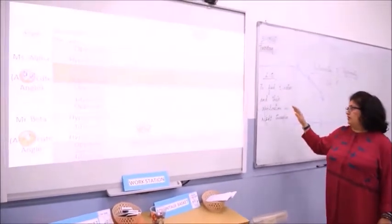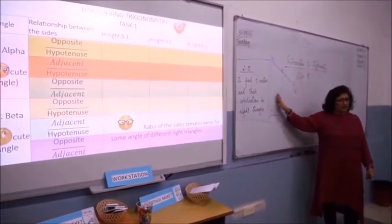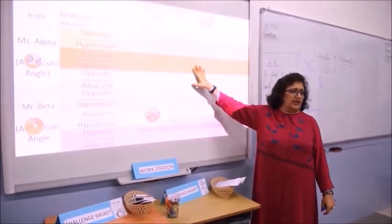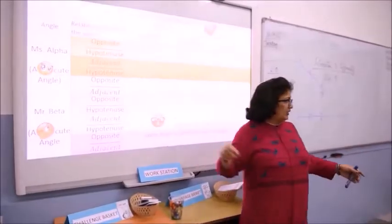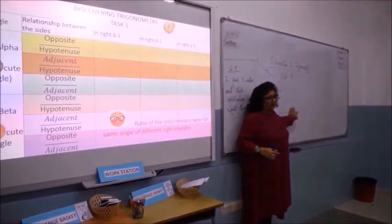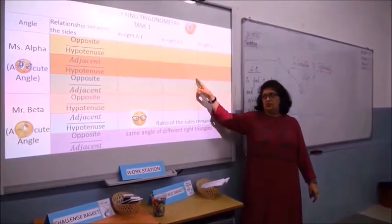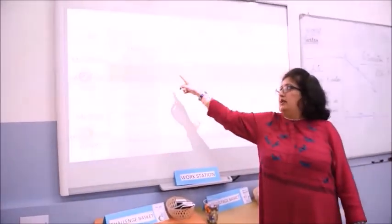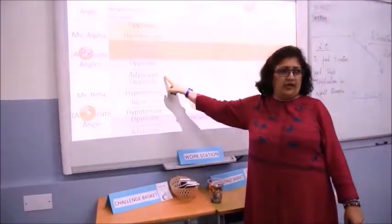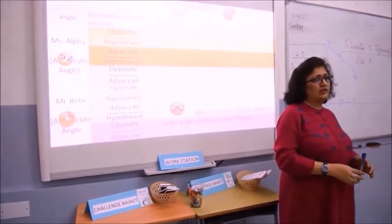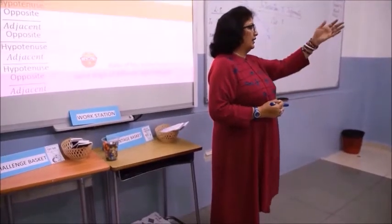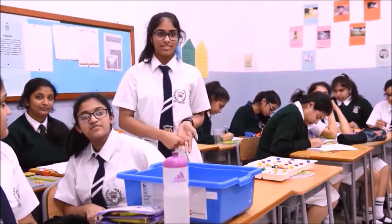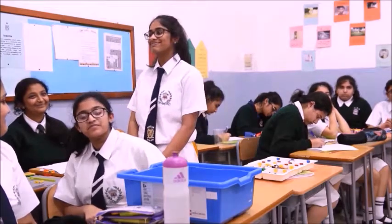You have already made similar right triangles. Through these similar right triangles, let us start discovering trigonometry. Write the ratio of the sides with relation to acute angle. As we have denoted one acute angle as alpha and another acute angle as beta, write the ratio of the sides. The first ratio is opposite by hypotenuse, second is adjacent by hypotenuse, third is opposite by adjacent. How many relations between the three sides can be found? There are six relations: opposite by hypotenuse, adjacent by hypotenuse, opposite by adjacent, hypotenuse by opposite, hypotenuse by adjacent, and adjacent by opposite. Very good. Clap for Hannah.